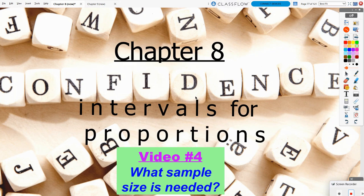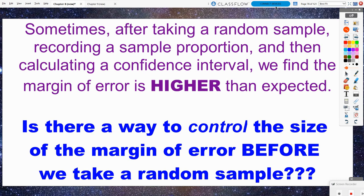Video four of chapter eight. We're going to focus on a certain aspect of confidence intervals in this video where the big question is what sample size are we going to need to carry out the confidence interval? So sometimes after taking a random sample and we take our sample proportion, we calculate the confidence interval, all of a sudden we discover that the margin of error is higher than we expected it to be. So is there a way that we can control the size of the margin of error before we even take our random sample?